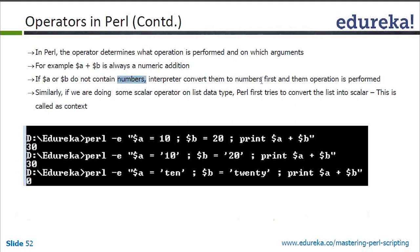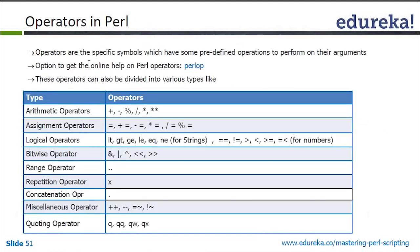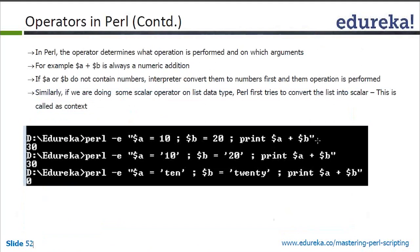When you want to do addition, multiplication, or any operation, the interpreter must understand what is on the left-hand side and right-hand side of the operator. If they are not compatible, Perl will first make them compatible and then do the operation. If $A and $B don't contain numbers, the interpreter converts them to numbers first. The plus operator is numeric — arithmetic operators are only for numeric values.